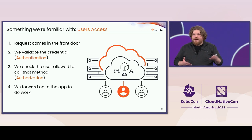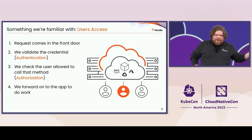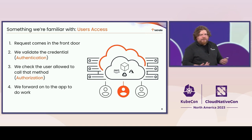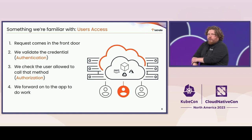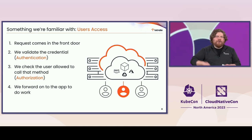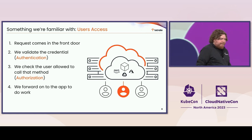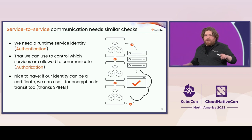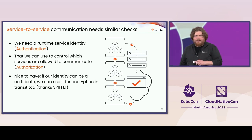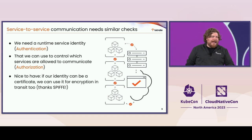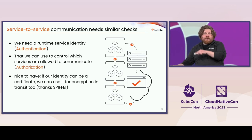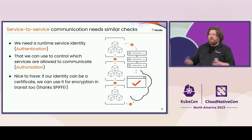If we start to think about how we handle that, the immediate thing that comes to mind is something like an API gateway or your front-end web service. There we usually have a pretty routine flow: a request comes in with some end-user credential — maybe a JWT, maybe an API key. We authenticate that credential, validate it's allowed to do the action it's attempting, authorize the action, and forward it to the app. So for service-to-service communication, we probably want to do something similar: a runtime identity we can authenticate, and use that to authorize service-to-service access. If we use something like Spiffe, we can represent that identity as a certificate and get encryption in transit kind of for free.